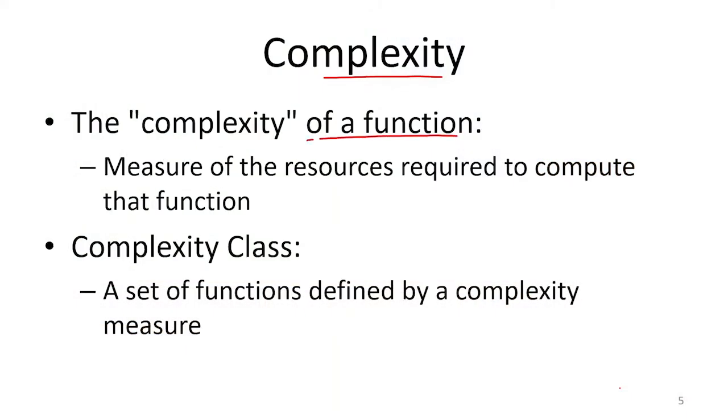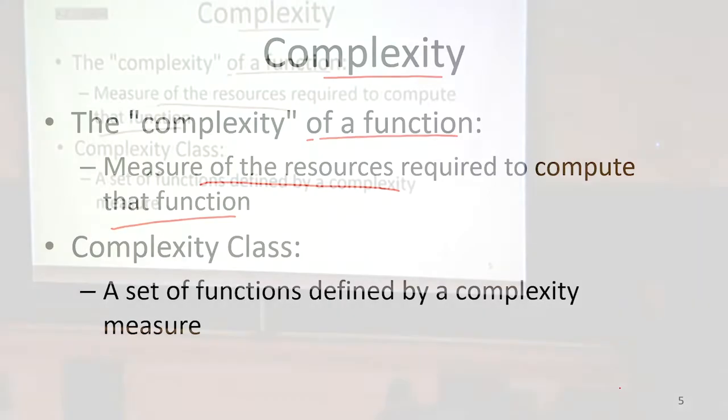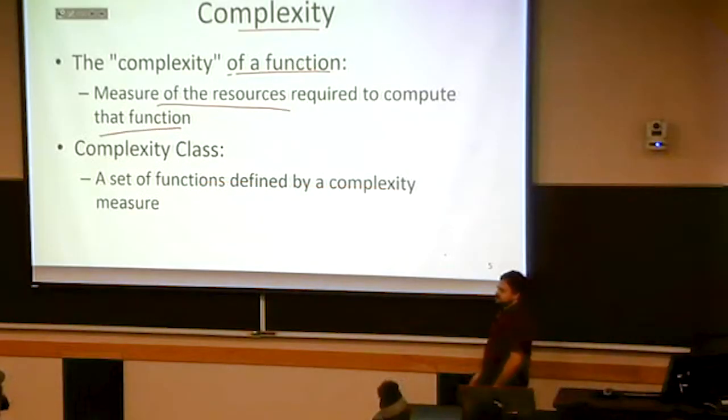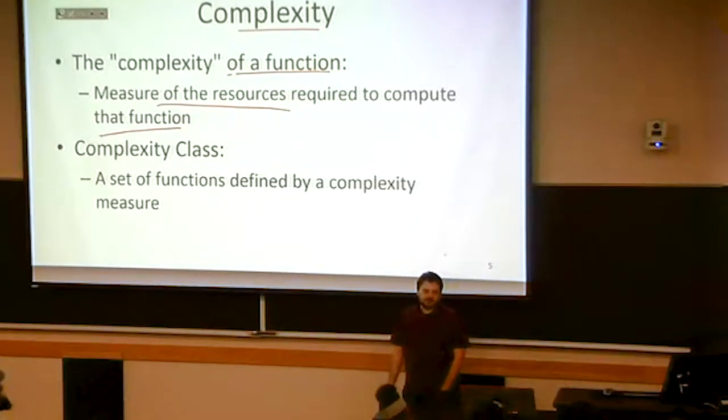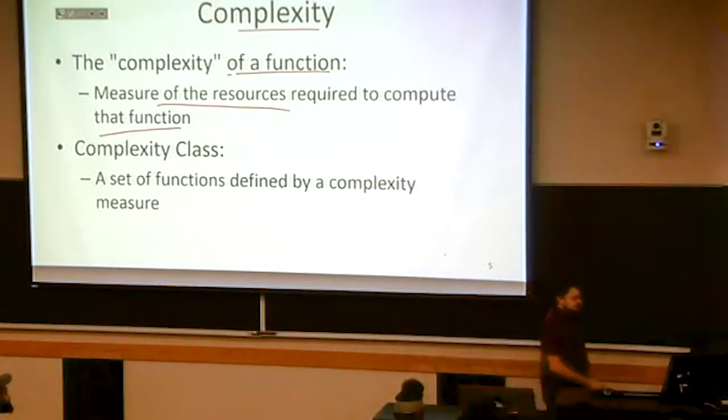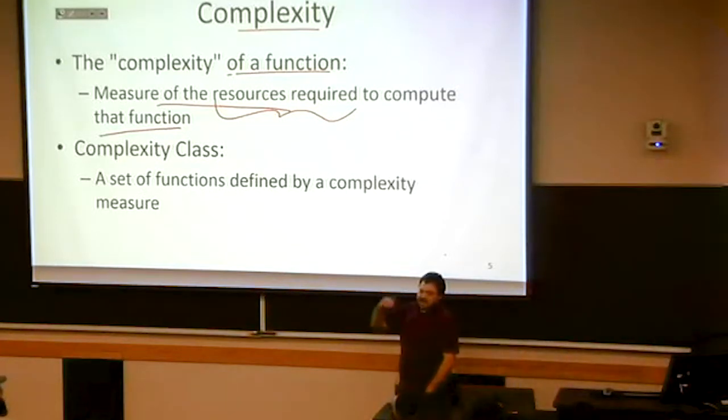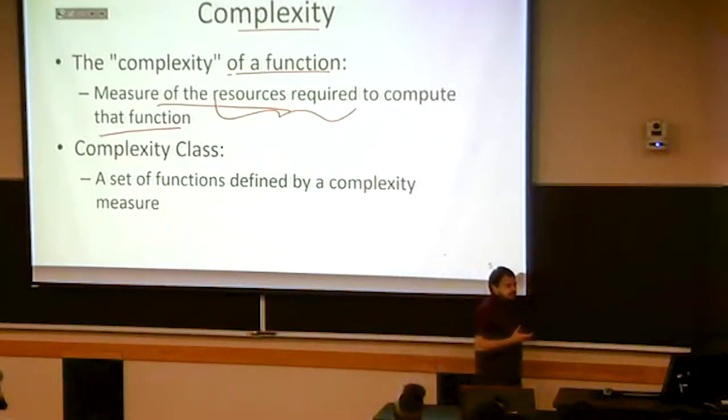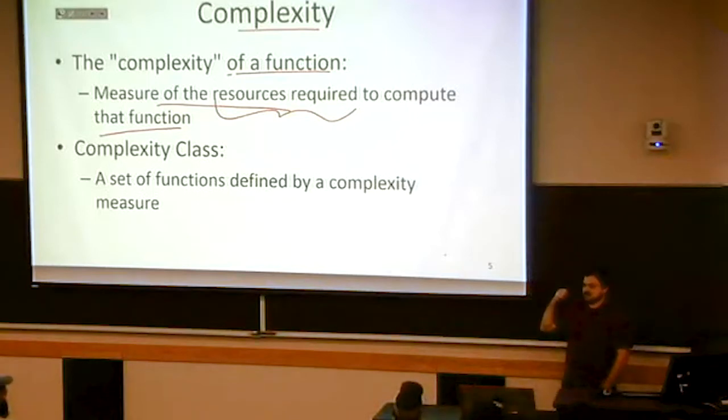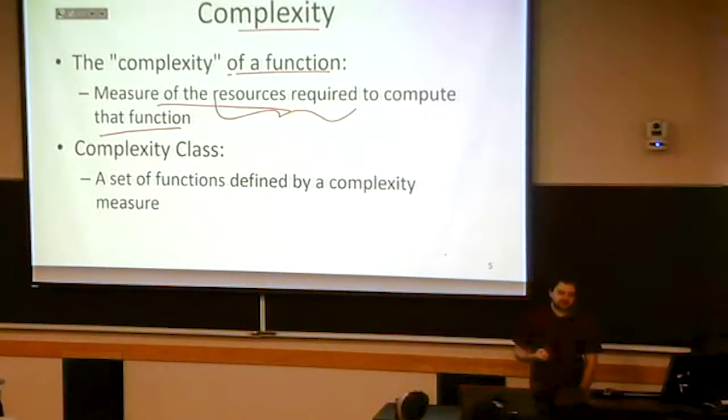Complexity is essentially going to be a property of a function. If I'm talking about a function, I can talk about the complexity of that function, which is the measure of the resources required to compute that function. Some functions are simpler than others and the measure for how difficult a function is going to be is essentially what resources we required in order to do it. Functions that have a higher complexity require more resources to do that, and in this case we're talking about the requirement: what is the number of that resource that are strictly needed.